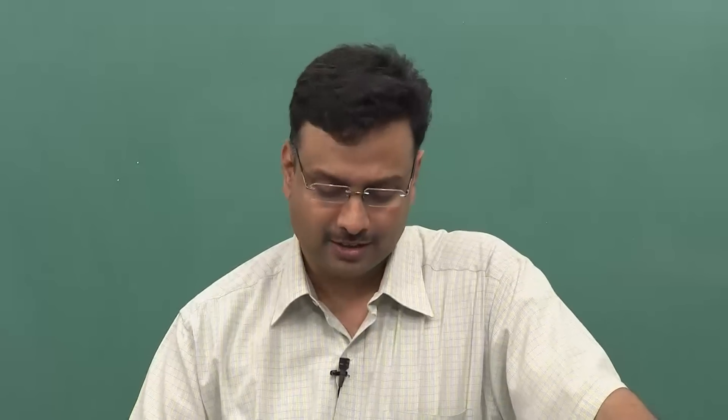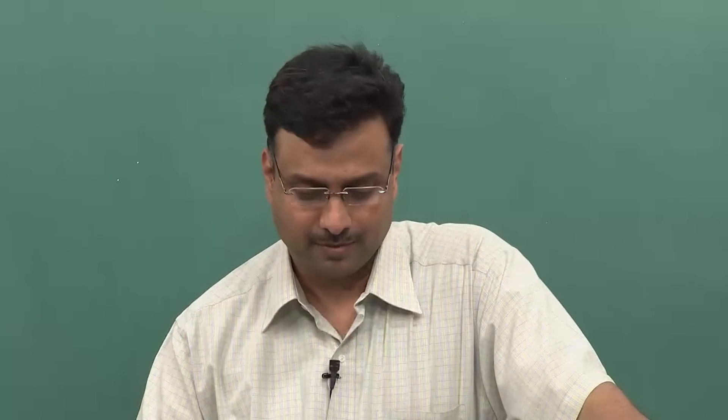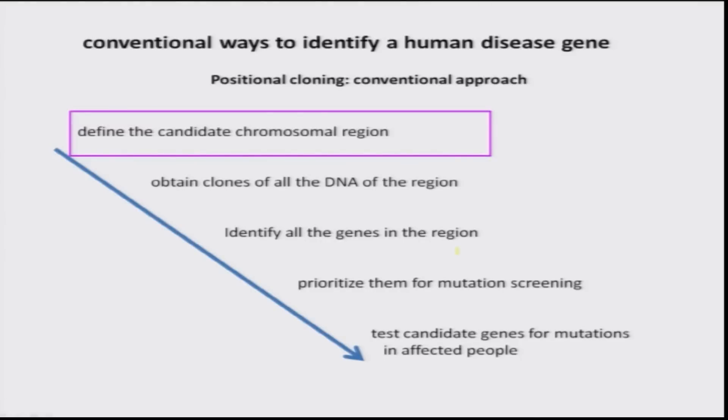After identifying candidate variations, you have to validate them using animal models or other systems to confirm that the changes you have seen indeed affect the way the cell, tissue, and organism functions. As you can see, this is a laborious process — it takes years to identify the defective gene and characterize it using different model systems. Let us look into how you define the candidate chromosomal region, as the rest of the steps — getting genes from a library, mutation screening, and creating animal models — have already been discussed.